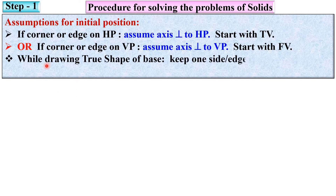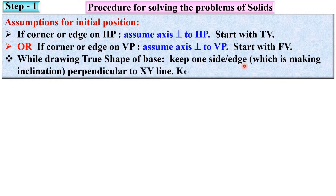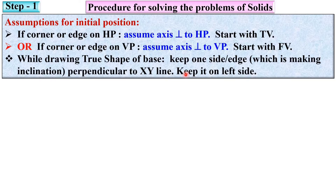For the first stage, while drawing the true shape of the base, keep the side or edge that is making the inclination perpendicular to the XY line, and keep it on the left side generally. It is not always compulsory that the side or corner is on the left side, but if the side or edge is on the HP, keep it on the left side in the first stage, either in the top view or front view.